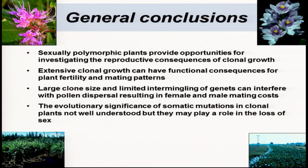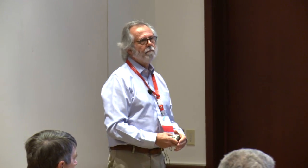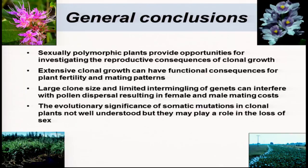In general, the conclusions to my talk: sexually polymorphic plants provide very good opportunities for investigating the reproductive consequences of clonality. Extensive clonal growth can have important functional consequences for plant fertility and mating patterns. Large clone size and limited intermingling of genets — particularly where we have dispersal of propagules through water or by humans — can interfere with sexual polymorphisms resulting in both female and male mating costs. Finally, the evolutionary significance of somatic mutations in clonal plants is not well understood, but it may play a role in the loss of sex, which is often observed particularly at the margins of the range of clonal species. Thank you.